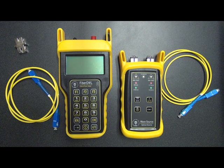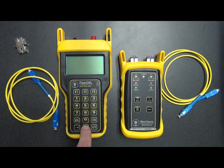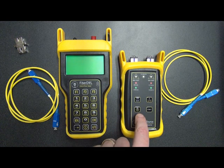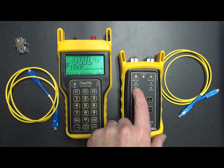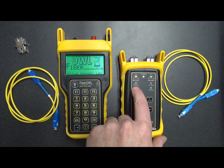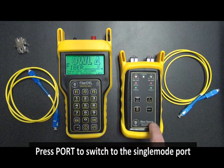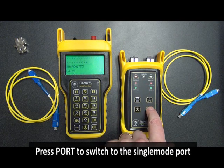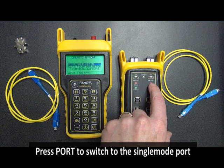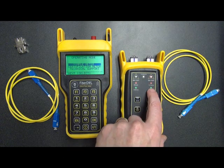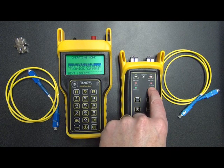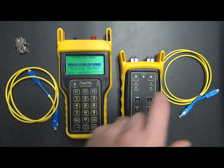The first step is to power on both testers. You press the power button on the Fiber Owl and the power button on the wave source. On the wave source, you'll notice that the multi-mode port is lit by default, so we need to switch to the single-mode port by pressing the port button. You'll notice that the indicator LED here is red, and that means that we're outputting 1310 nanometers at this point.